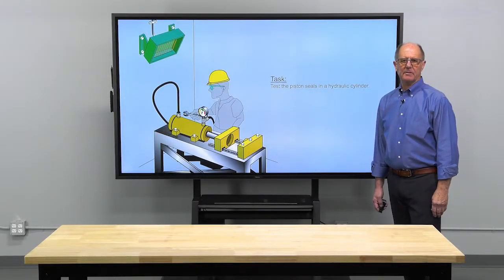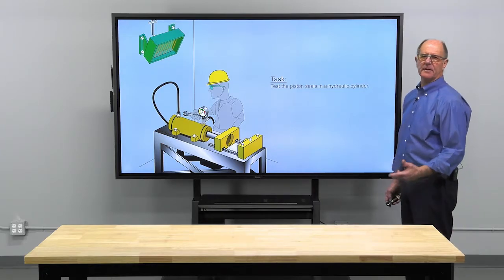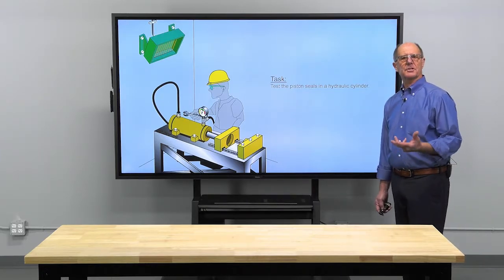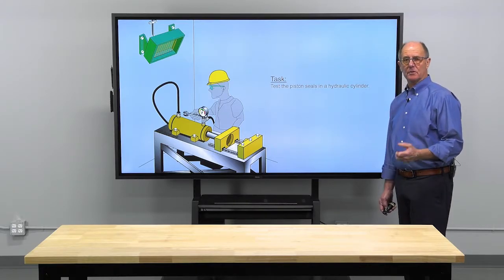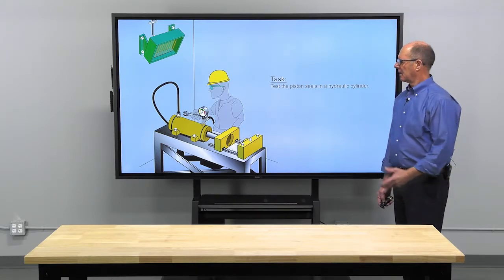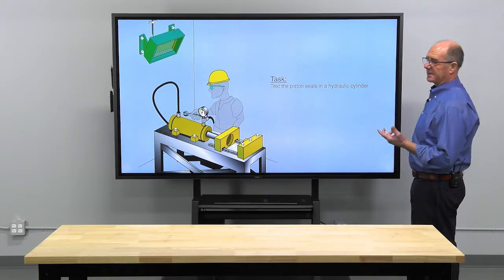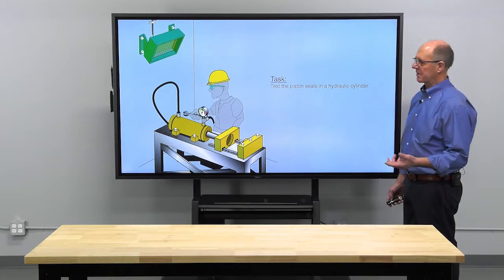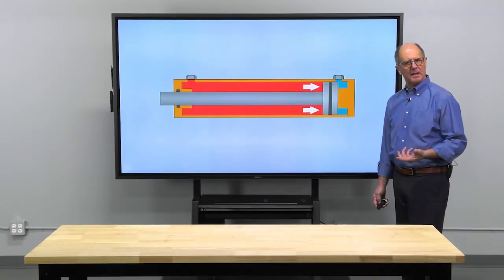In this case, a mechanic was tasked to test a hydraulic cylinder after the operator reported that the cylinder was drifting when the directional control valve was in the halt position. A common practice in the industry is to disconnect an oil transmission line and pressurize the cylinder. Let me explain.